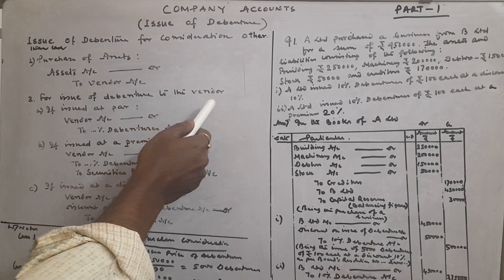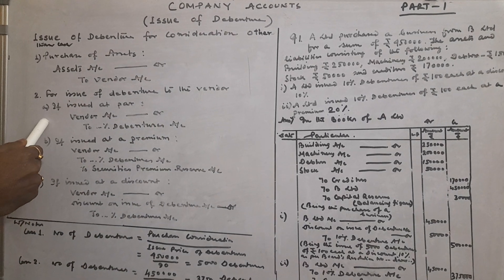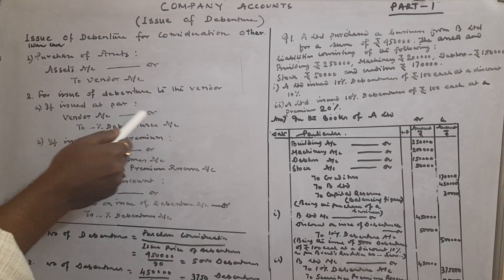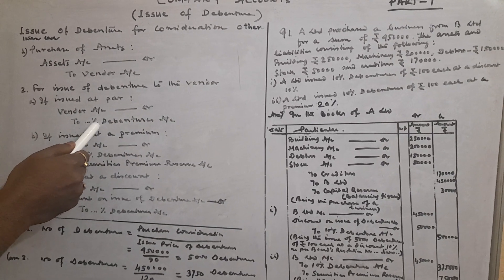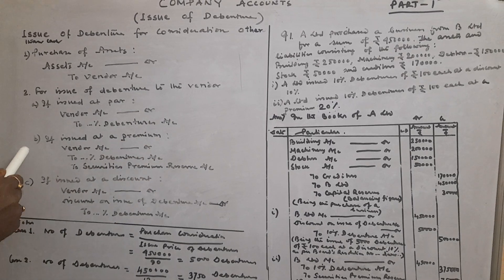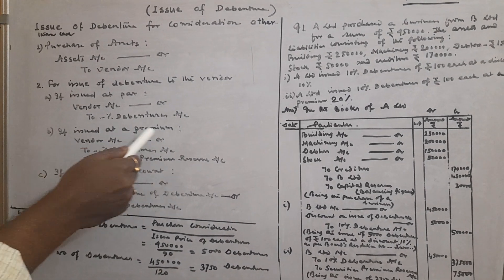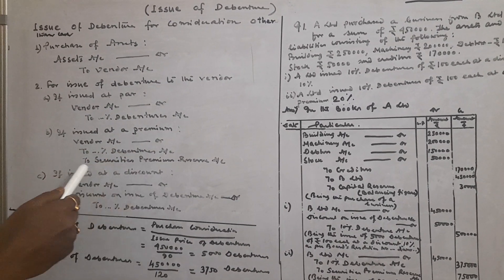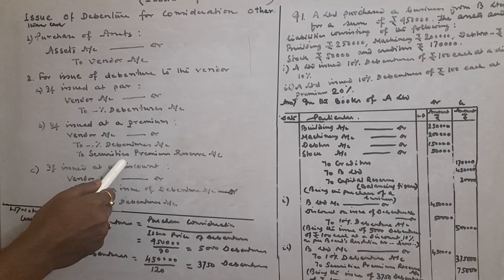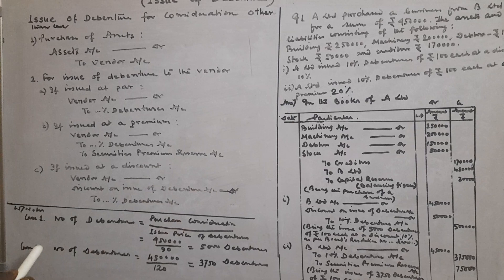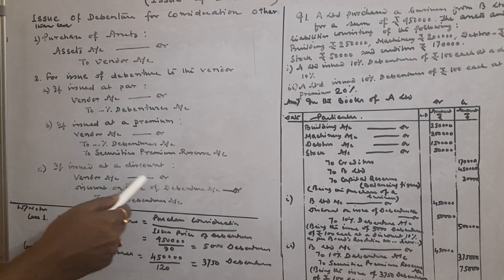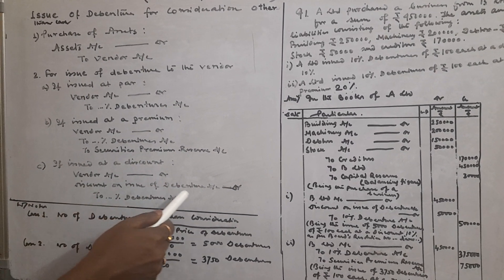Number two: For issue of debenture to the vendor. Condition A — if issued at par: Vendor Account debit, to Dot Dot Dot Percentage Debenture Account. Condition B — if issued at a premium: Vendor Account debit, to Debenture Account, to Securities Premium Reserve Account. Condition C — if issued at a discount: Vendor Account debit, Discount on Issue of Debenture Account debit, to Percentage Debenture Account.